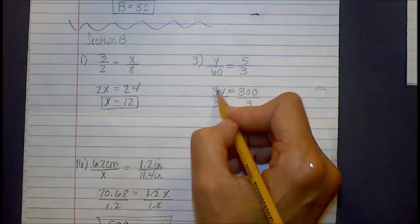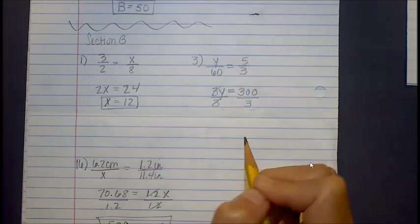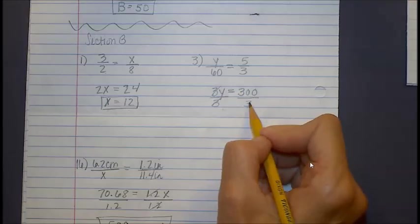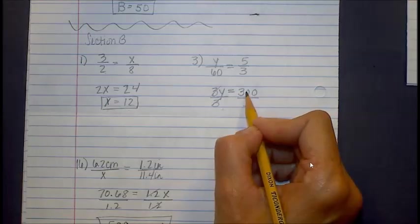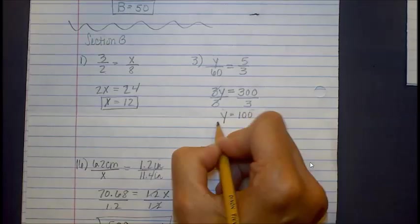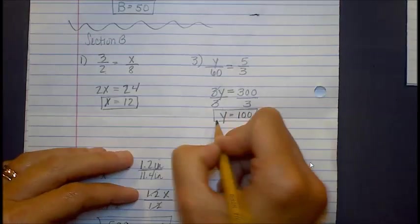So the 3s cancel out on the y side here. And then we take 3 into 300. We'll go 100 times. So y is equal to 100.